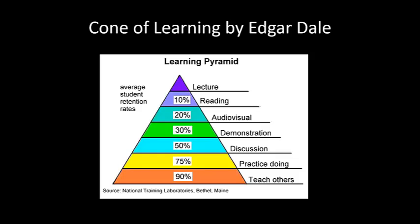What we are going to talk about has to do with some old information, actually researched by Edgar Dale. The basic point is students can learn passively or actively. Dale felt that depending on what students do in the learning process has a direct influence on how much they retain of what you're trying to get them to learn.